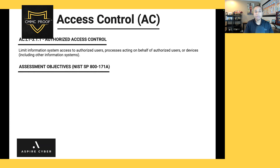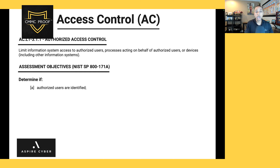We always want to look at the assessment objectives, because that's how you'll be able to do a thorough self-assessment to make sure your organization has properly and fully implemented all of the requirements. The first one: we need to determine if authorized users are identified. As we're performing this self-assessment for our fictitious organization, how are we doing that? We're using Microsoft 365.